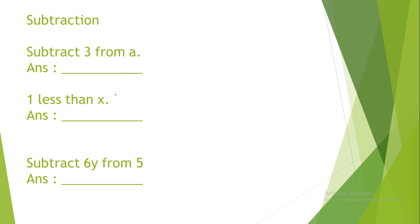Subtraction. Subtract 3 from a. If you give the answer as 3 minus a, this is incorrect. The correct answer is a minus 3. Remember, that subtraction is non-commutative. So, 3 minus a is not the same as a minus 3.